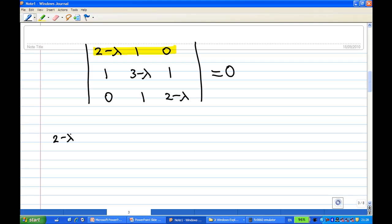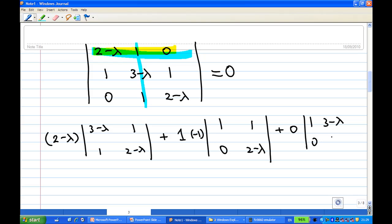So this will give me (2-λ) multiplied by the cofactor [(3-λ) 1; 1 (2-λ)]. This is obtained by striking out the first row. And then plus 1 times the cofactor of first row second column, which is minus [1 0; 1 (2-λ)]. And then the last value will be 0 times [1 0; (3-λ) 1].